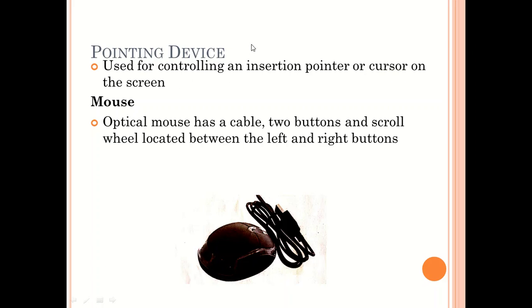The first pointing device that you should know is what you call the mouse. We have got multiple types of mouse. The one displayed here is what you call the optical mouse. We say optical mouse because it is controlled by light — it is light sensitive. If you move it, you'll be able to see some light at the bottom. It has two buttons: the left button and the right button, and a cable that enables you to connect to the computer.